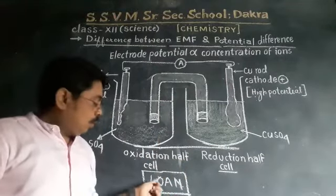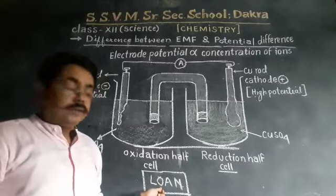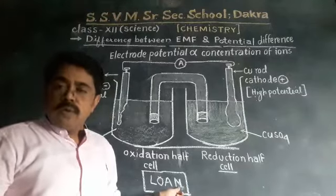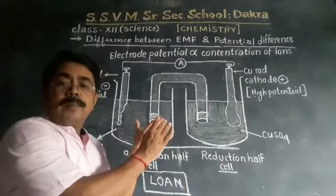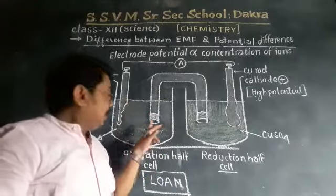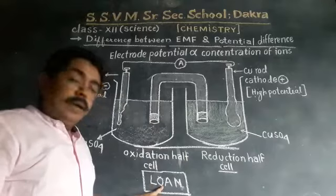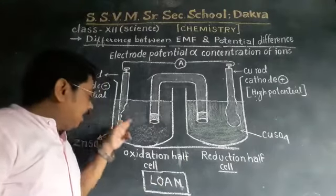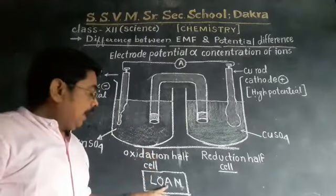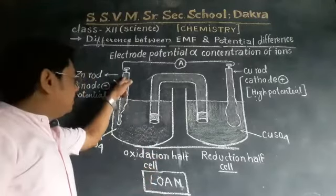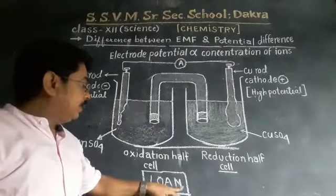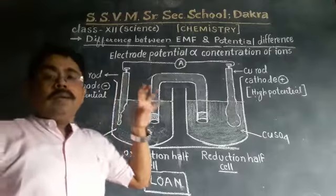L stands for Left. O stands for Oxidation. A stands for Anode. And N stands for Negative. This means in an electrochemical cell, the beaker kept on the left side — by convention — is where oxidation takes place, so it is called the oxidation half cell. The electrode dipped in the left beaker is called the anode, and N means the anode is negatively charged.